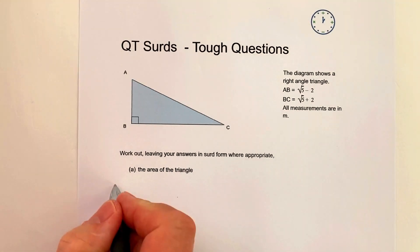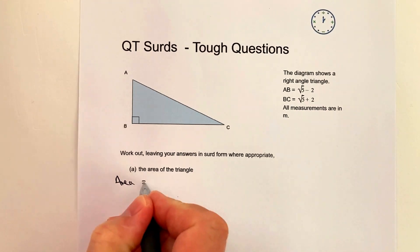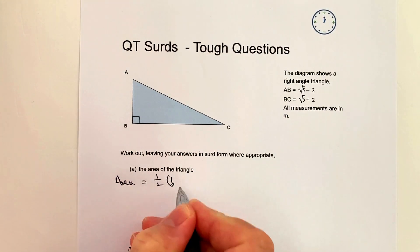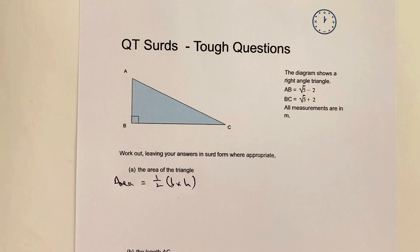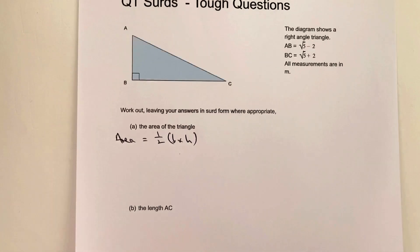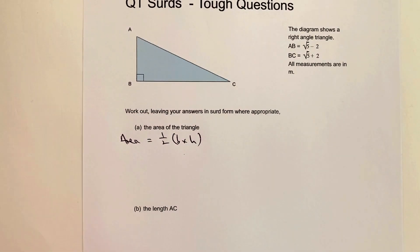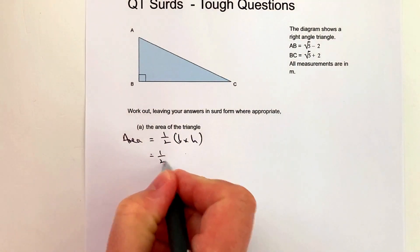For all triangles we can work out area equals half base times height. Some people write base times height over 2, which is fine. For this problem, it's easier to write it out as a line. So half...